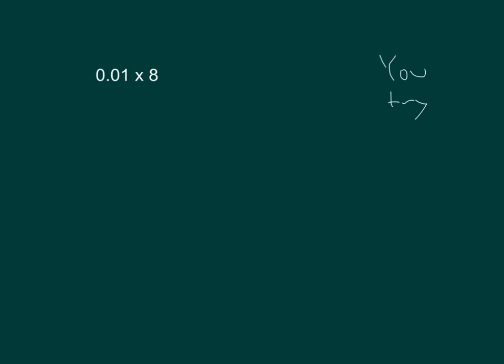It's your turn to try. Try one-hundredth times eight. Write it out as a fraction, and then put it in decimal form. One-hundredth times eight is equal to eight-hundredths.